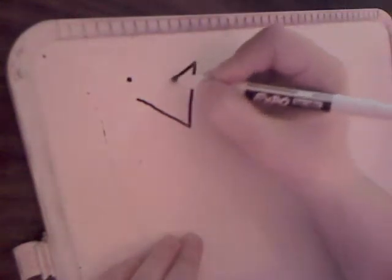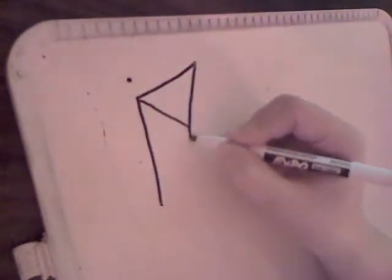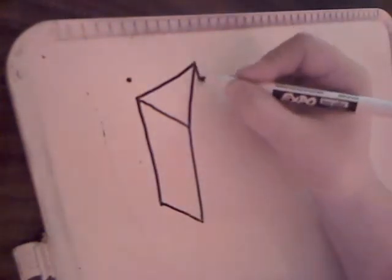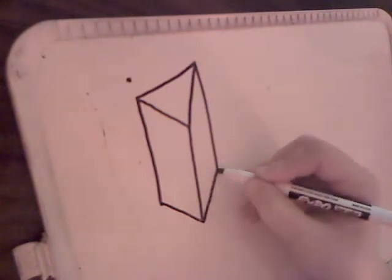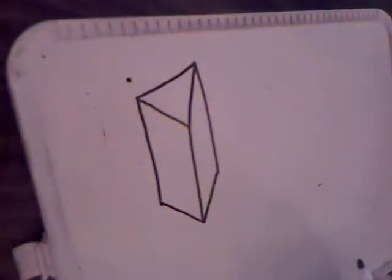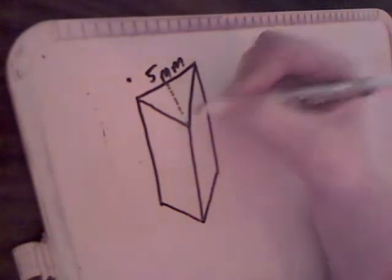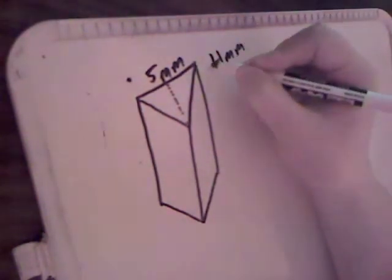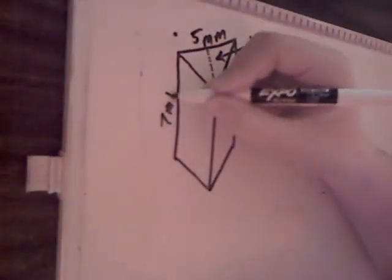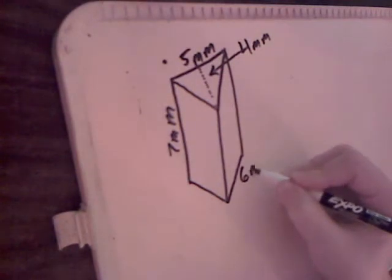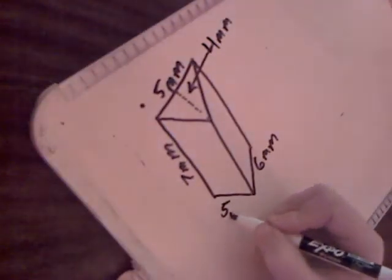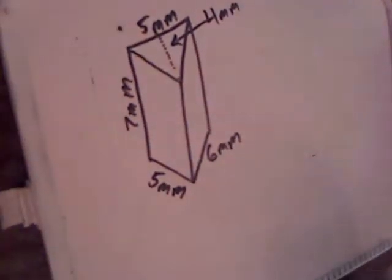That is the rectangular prism. Now let's go ahead and look at the triangular prism. This one's going to take me a moment to draw to make sure I can get everything there that needs to be there. Okay, now we have our triangular prism.